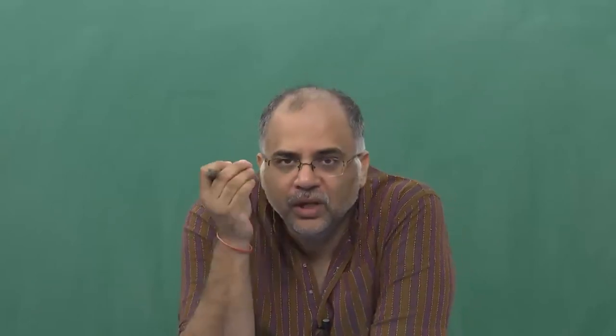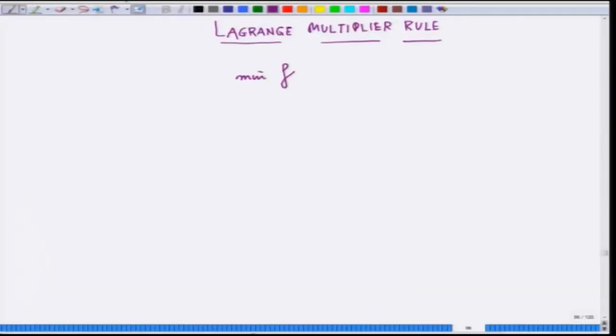Let us now speak about the Lagrange multiplier rule. The Lagrange multiplier rule is associated with something we call constrained optimization problems. In the last lecture, we had been seeking x and y which minimize or maximize a function f(x,y) over all of R2. We were not putting any restrictions on x and y, but now we can put a restriction on x and y and seek to minimize a function of two variables.